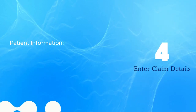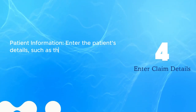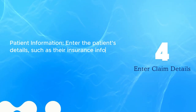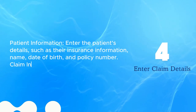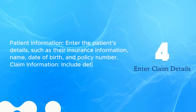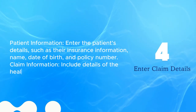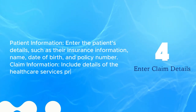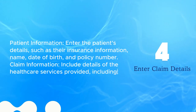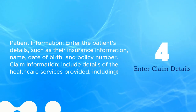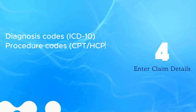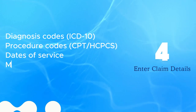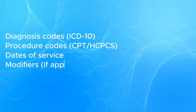Step 4: Enter claim details. For patient information, enter details such as their insurance information, name, date of birth, and policy number. For claim information, include details of the healthcare services provided, including diagnosis codes, procedure codes, dates of service, and modifiers if applicable.